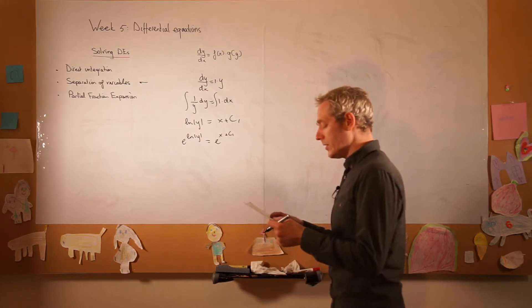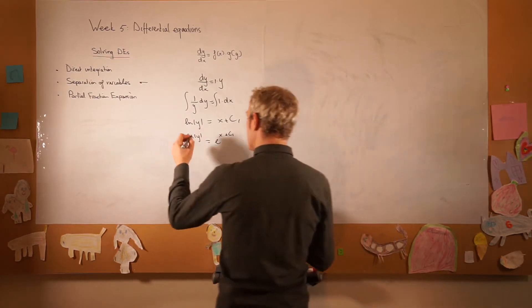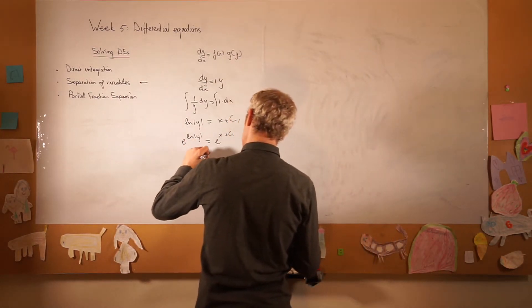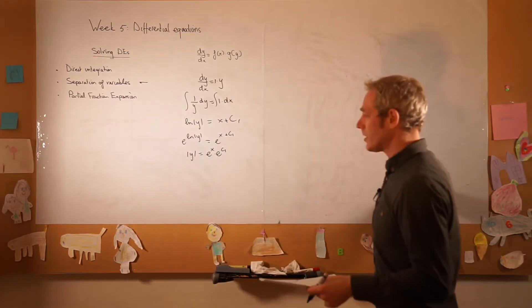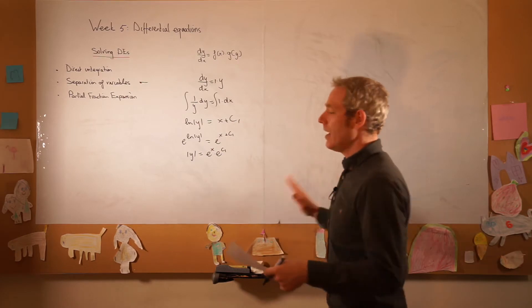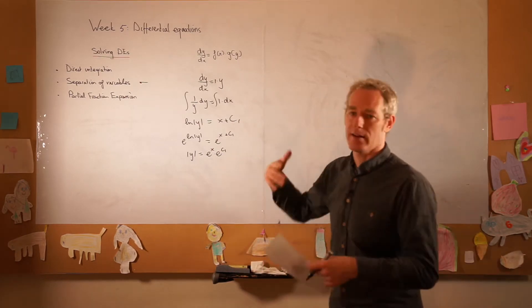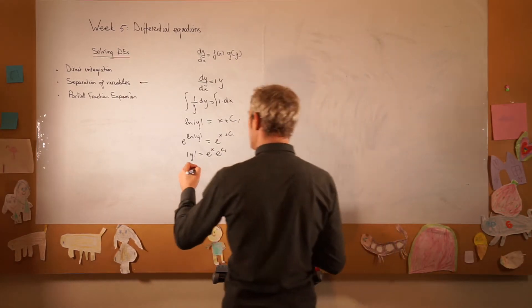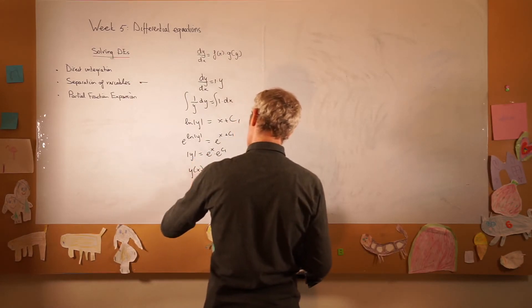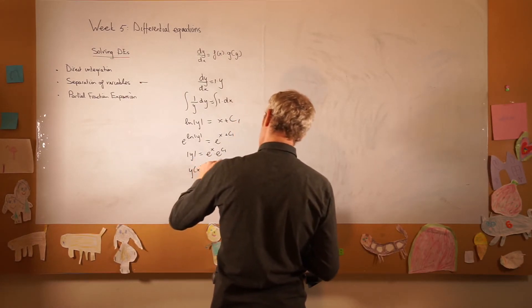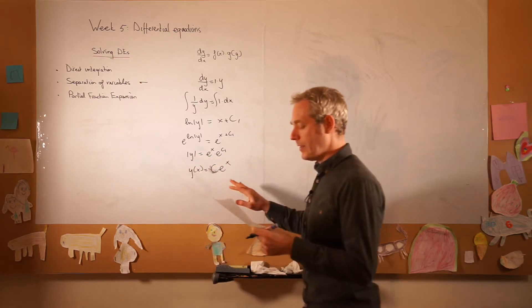We take e to the power of the left-hand side and e to the power of the right-hand side and what we do then is we find that y absolute is e to the power of x times e to the power of c1, and we skip that whole discussion we had on the board here about the positive values of this and a negative and equal to 0, then we just say y(x) is equal to some form of c, e to the power of x, and we are done with it.